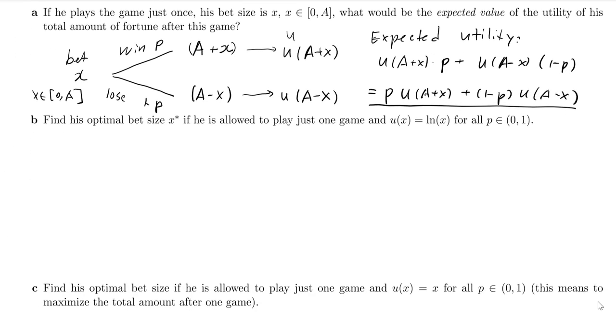So that's what we have. Now, let's look at part B. So this bet x can be anywhere between 0 and capital A. So we now want to maximize the utility by choosing the best size, x star.